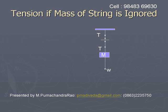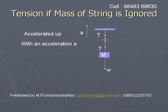Let us consider a weight W suspended from a string, and the string is held from the ceiling, and the entire system is moving up with an acceleration A. The upward arrow near A represents the entire system moving up with acceleration A.